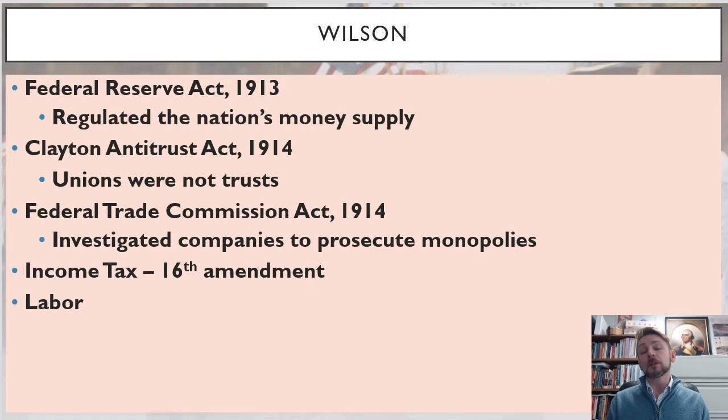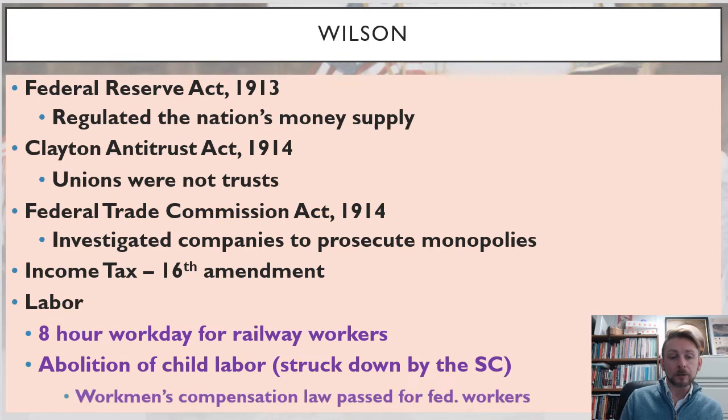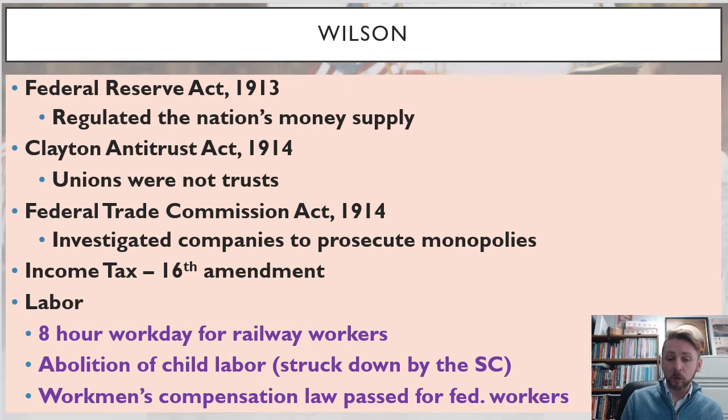This income tax did not apply to ordinary Americans — it only applied to the richest income earners in the United States. Wilson also signed labor legislation: the Keating-Owen Labor Act would ban child labor, he supported an eight-hour workday for railway workers, and a workman's compensation law was passed for federal workers.